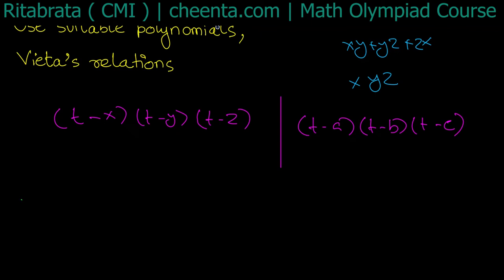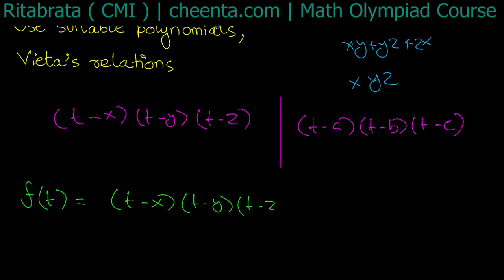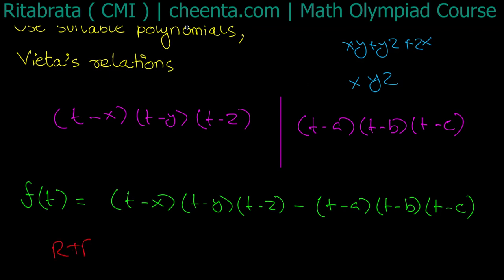For that, I define a polynomial f(t) as the difference of these two things: f(t) = (t − x)(t − y)(t − z) − (t − a)(t − b)(t − c). My target is to prove that f is the zero polynomial, that f is identically zero.